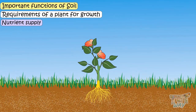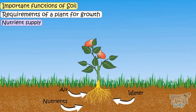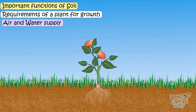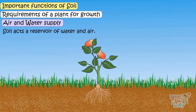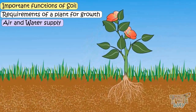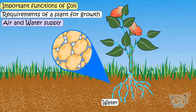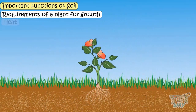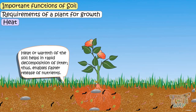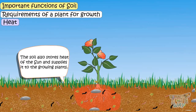Roots also go deeper into the soil in search of nutrients, water and air. Soil acts as a reservoir of water and air — plants absorb water through their roots from this reservoir, and roots breathe in oxygen from the air stored in the soil mass. The heat or warmth of the soil helps in rapid decomposition of litter, enabling faster release of nutrients. The soil also stores sun heat and supplies it to the growing plants.